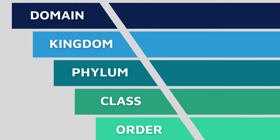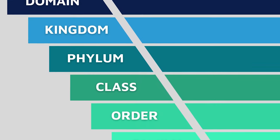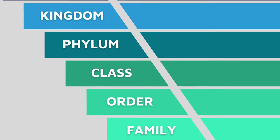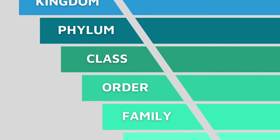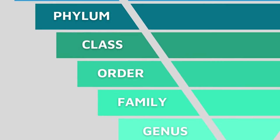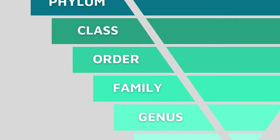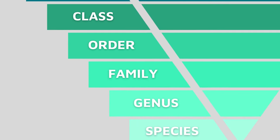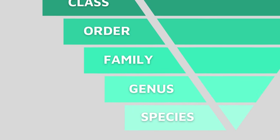As we continue down to the other hierarchy levels, we get less inclusive and therefore more specific. Moving down through an organism's phylum, class, order, family, genus, and finally to species.